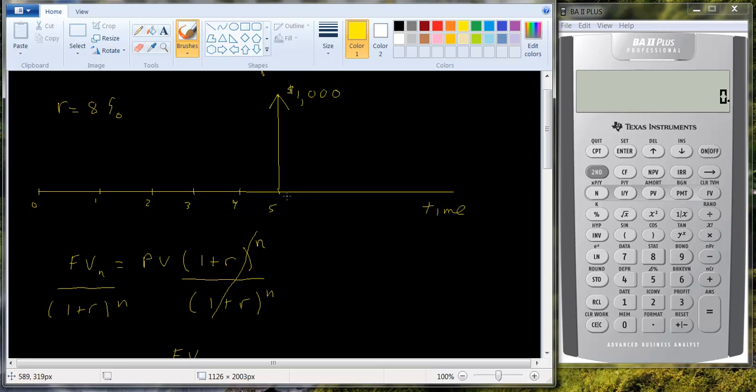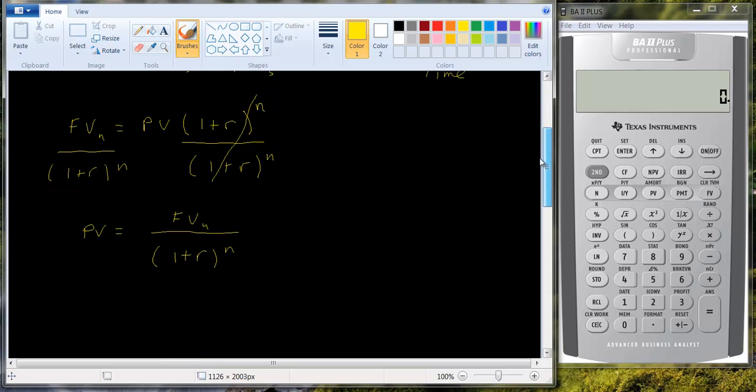But if you think about it, why does this work? If we were bringing it back one period, it would be one plus r. If we were bringing it back two periods, it would be a thousand divided by one plus r squared. And so let's take a look at this.